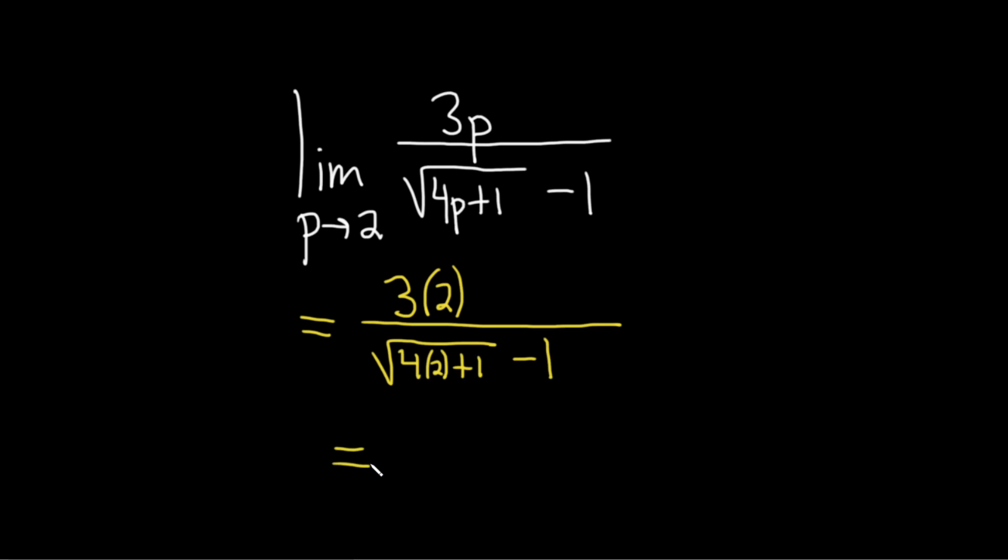This is equal to 3 times 2 is 6 divided by. Here we get 4 times 2 which is 8. 8 plus 1 is 9. So this is the square root of 9 minus 1.